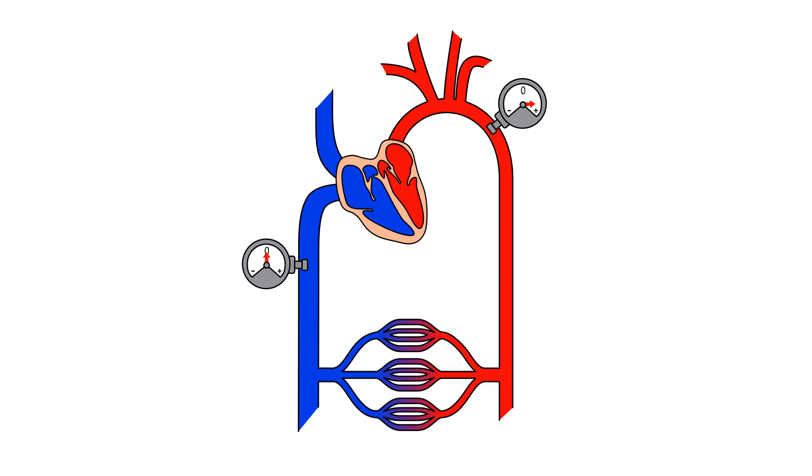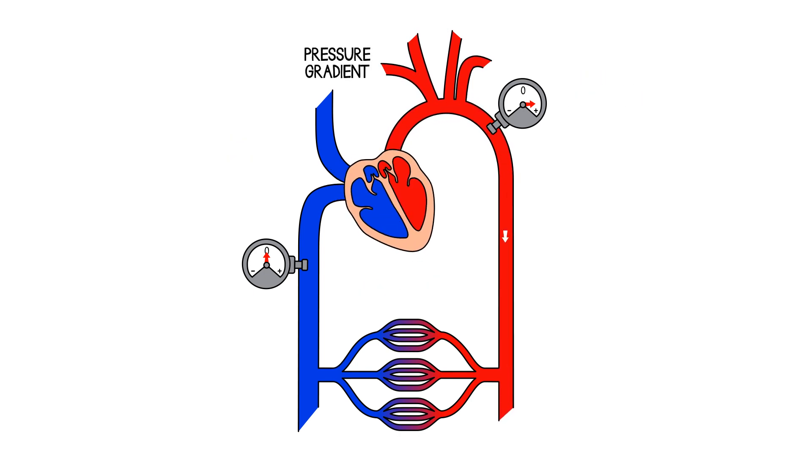And of course, what we've achieved by the heart pumping in this way is a pressure gradient. Because the pressure in the arterial side is now high, the pressure on the venous side is now low, that gives us a gradient and that's what pushes the blood around the body.